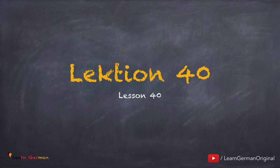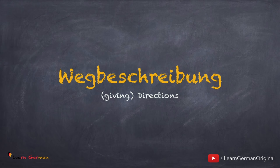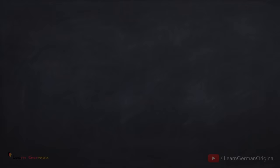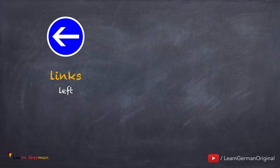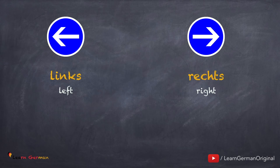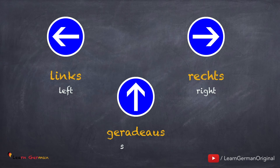Wegbeschreibung. We'll first learn three very important terms that we require for giving directions. The first one is 'links', the second one is 'rechts', and the third one is 'geradeaus'. Noch einmal: links, rechts, geradeaus.